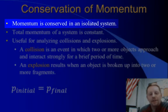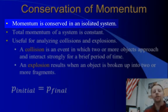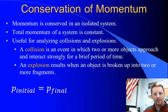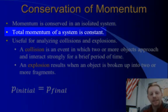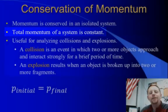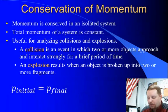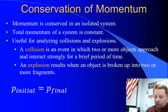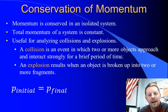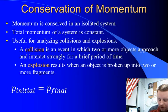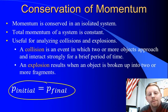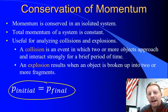Momentum is conserved in an isolated system. That means if there are no external forces acting upon it, the total momentum in that system is always going to be the same. This is very useful for analyzing systems of collisions and explosions. A collision is an event in which two or more objects approach and interact strongly for a brief period of time. An explosion results when an object is broken up into two or more fragments. The conservation of momentum says in a closed system with no external forces, the total momentum before any event is the same as the total momentum after the event — initial momentum equals final momentum.